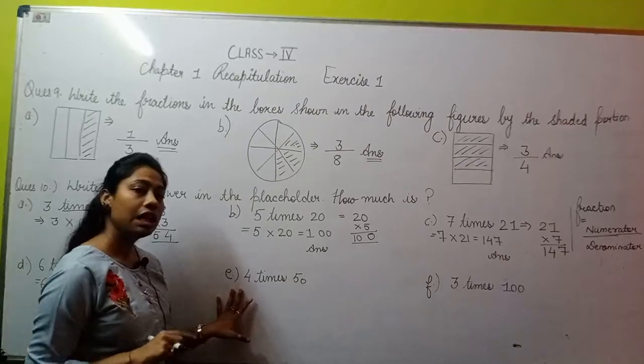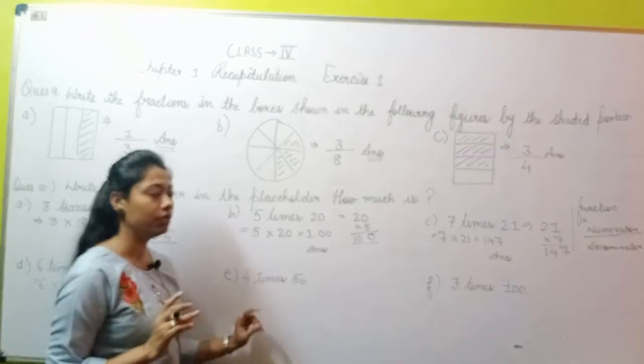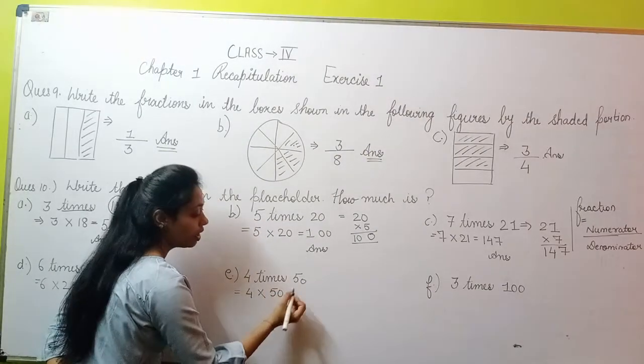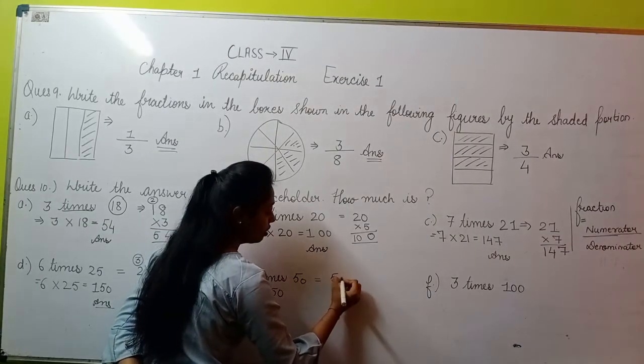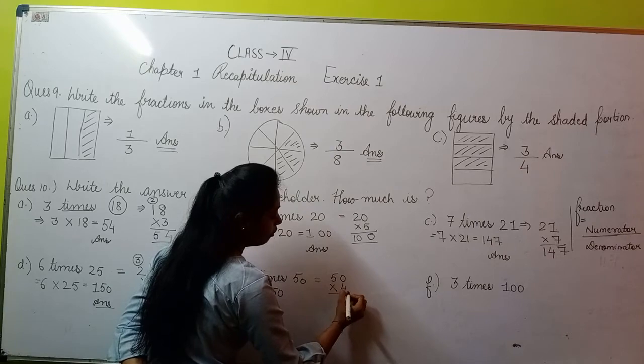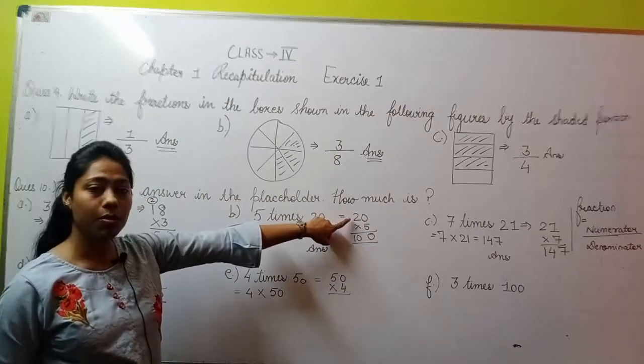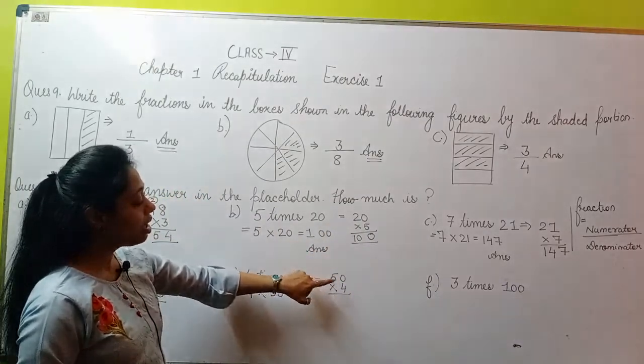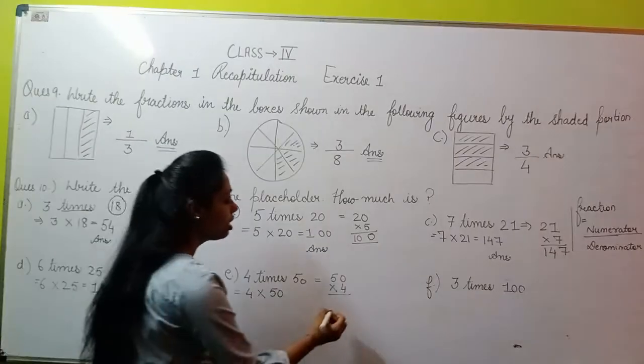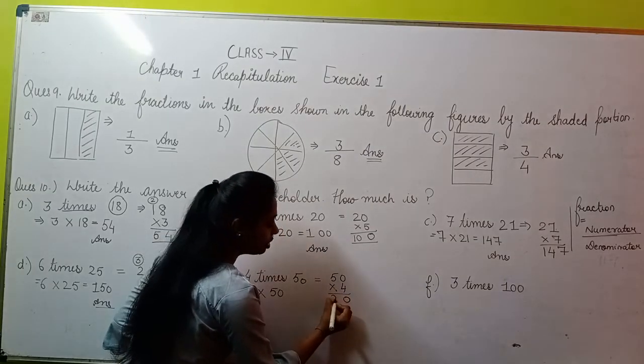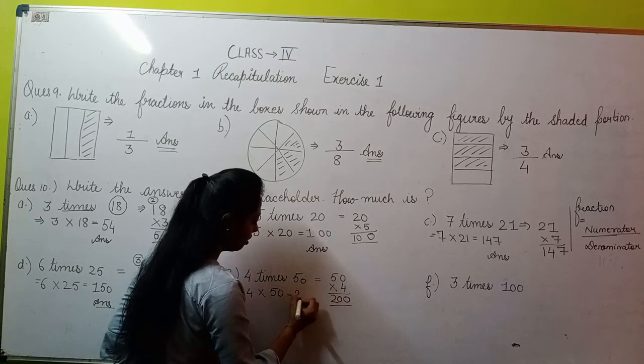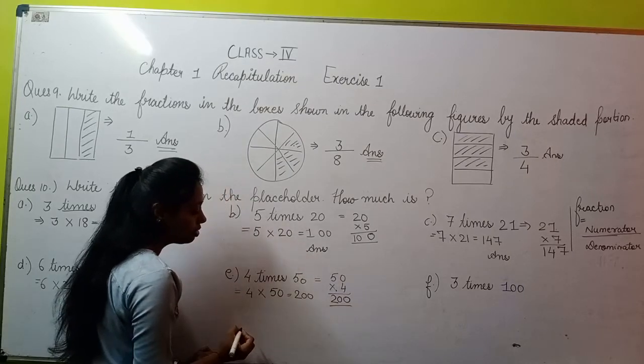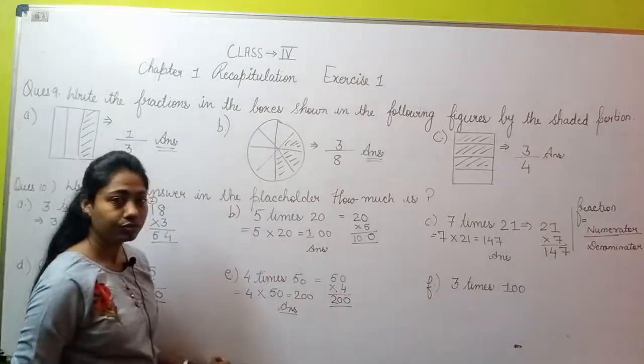Moving to your E part. E part says 4 times 50. 4 times 50 means you can write it as 4 multiply by 50. Let's multiply: 50 multiply by 4. 4 zeros—the same concept we applied earlier. If you multiply any digit by 0, the answer is always 0. 5 fours is 20. That means if you multiply 50 by 4 times, the answer is 200. This is your answer.